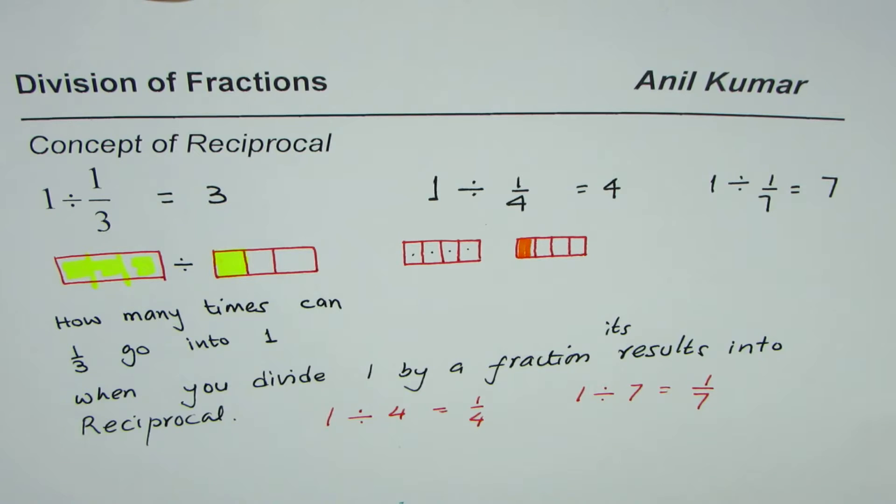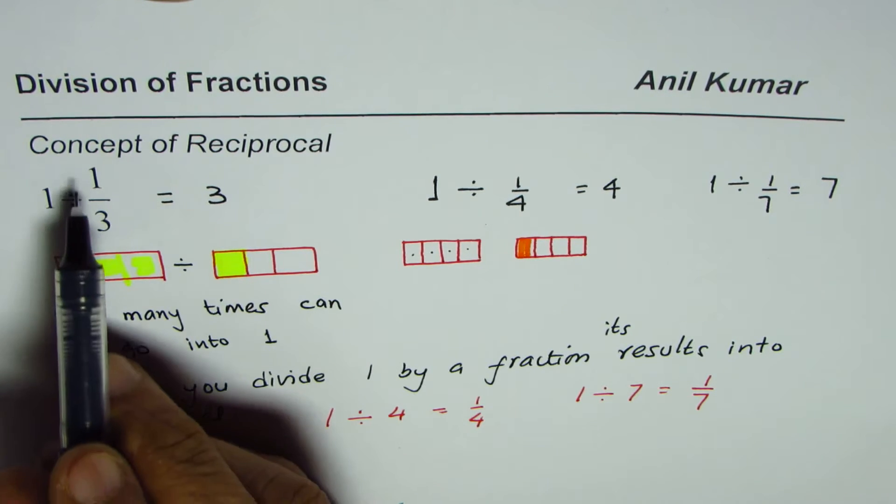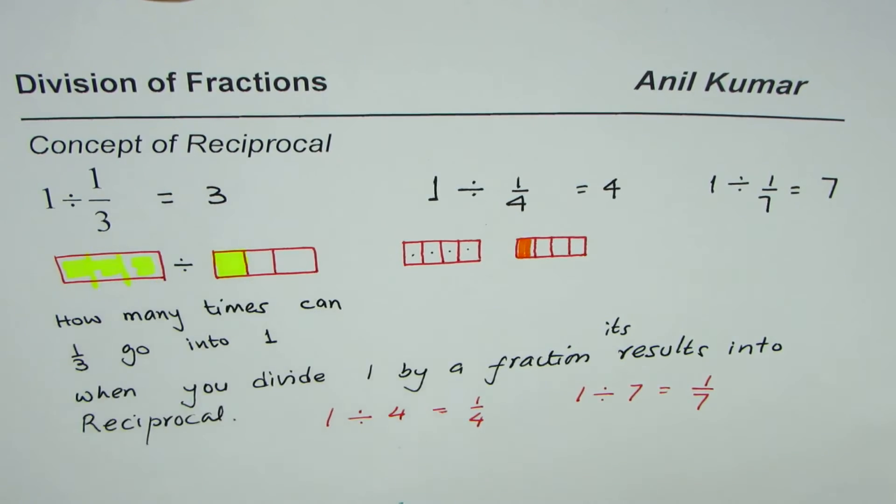So what we are trying to say here is division of fractions is very similar to division of whole numbers. We are working with same concepts. Now from this example we also learn one more thing. One divided by one over three is three.